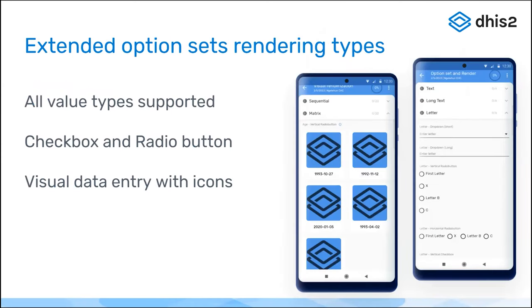Next, we have extended the rendering types for option sets. The available rendering types are radio buttons and checkboxes in vertical or horizontal layout, and visual data entry if icons are connected to the options. What is new is that those rendering types are now available for any value type the option set has. Before, visual only worked for numbers and the others only for text. Now, as long as you have an option set, you can choose any rendering type to shape your data entry form layout.